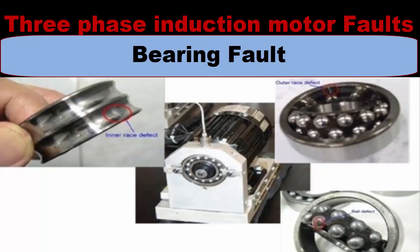Bearing fault: in three-phase induction motors, two sets of bearings are installed inside the motor housing for supporting the motor shaft. Their main purposes are to rotate the motor shaft freely and reduce friction. They consist of an outer and inner ring called races, and a set of rolling elements called balls. The balls are fixed on the inner and outer sides of the ring and reduce shaft friction, which can be further reduced by lubrication. If the balls or the outer or inner ring of the bearing are damaged, this bearing fault causes the motor to jam or become stuck. Motor bearing fault is shown in figure.